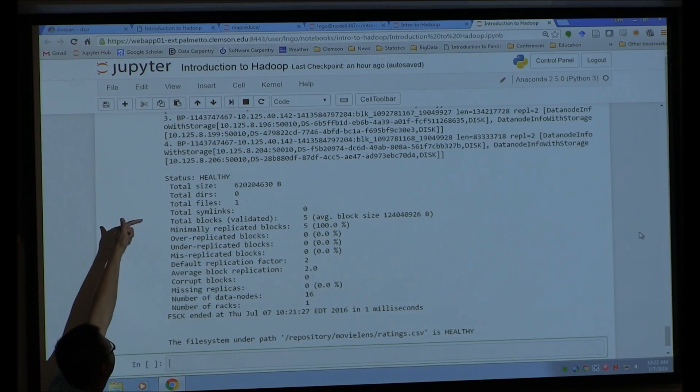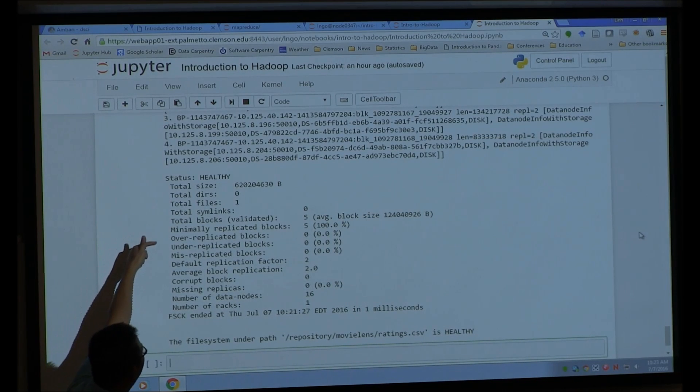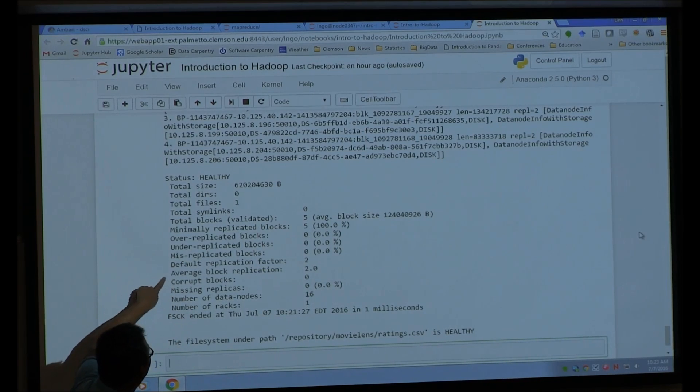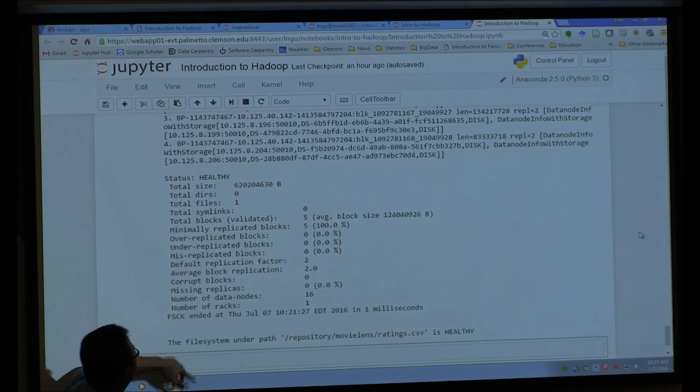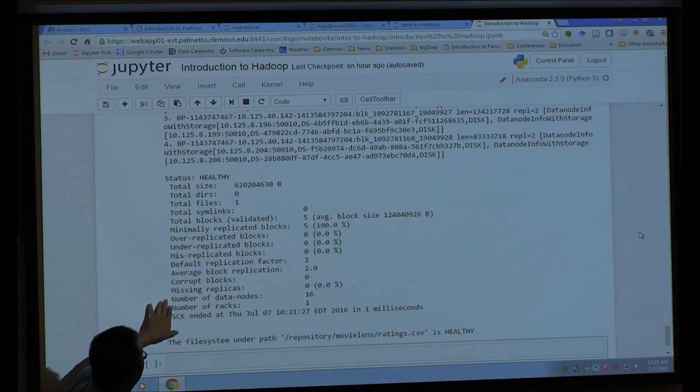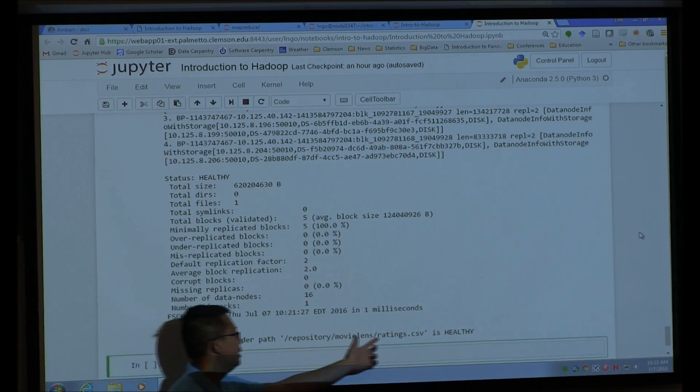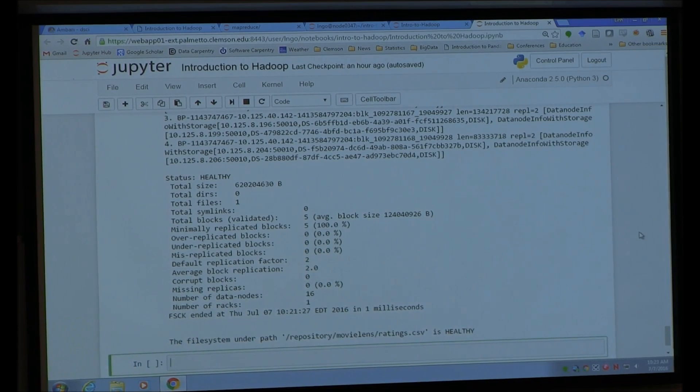Here you can find the report. Status is healthy. Total blocks is 5. Minimally replicated blocks is 5. Average block replication is 2. Default replication is 2. The total is we have 16 data nodes and one rack. So the file system under this path is healthy. That's what we want to see.